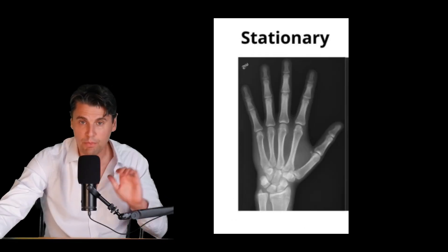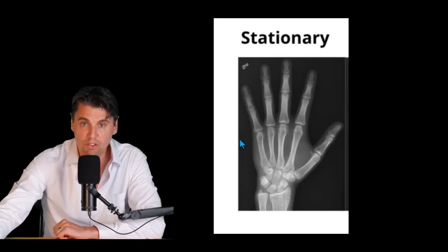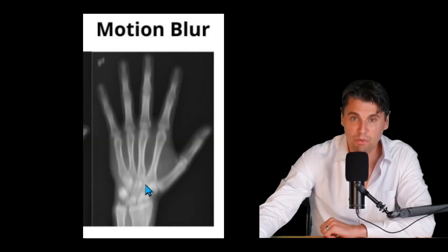If the whole hand was moving, instead of a nice sharp crisp hand that you're seeing right here, if during the x-ray exam the hand was moving, you could then see blurring.